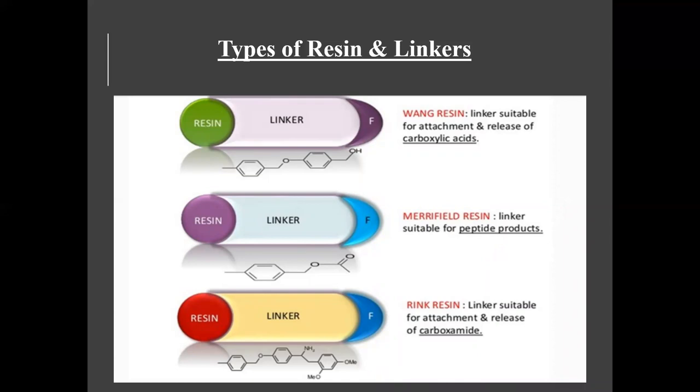Types of resin and linker: the name of the resin reflects the linker functional group. In the diagram, you can see how the resin and linker are attached to the reactants. First is Wang resin, which uses a linker suitable for carboxylic acid attachment. Merrifield resin is the linker suitable for peptide products — if we want to make peptide products, we use Merrifield resin. Rink resin is the linker suitable for the attachment and release of carboxylic acid compounds.